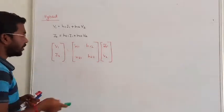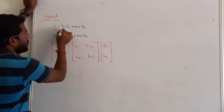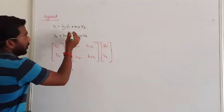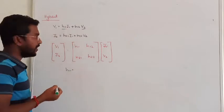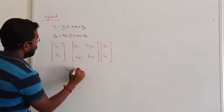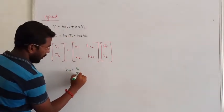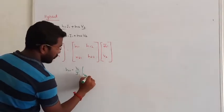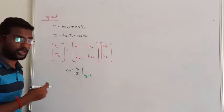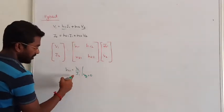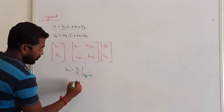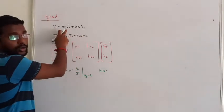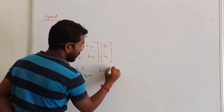Now we calculate each parameter. H11 is found when V2 = 0, giving H11 = V1/I1 — the input impedance under short-circuit output condition. H12 is found when I1 = 0, giving H12 = V1/V2 — the reverse voltage ratio under open-circuit input condition.